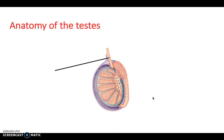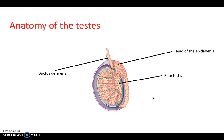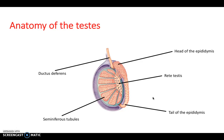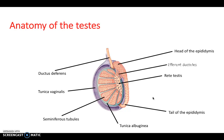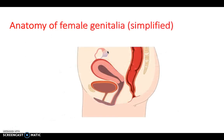Zooming in on the testis: the ductus deferens or vas deferens is visible, along with the head of the epididymis and the rete testes. At the bottom is the tail of the epididymis. Inside we have the seminiferous tubules — around 400 of these — where spermatozoa is produced. The tunica albuginea and tunica vaginalis surround the testes. You can trace the pathway: seminiferous tubules → straight tubules → rete testes → efferent ductules → head of the epididymis → ductus deferens → common pathway with the urethra for ejaculation.